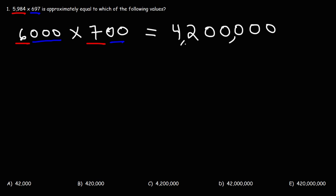Now, let's put our commas. So, the answer is about 4.2 million. Therefore, answer choice C is the correct answer. Now, if you were to do the math to get the exact answer, here's what you'll get. So, let's multiply these two numbers the old-fashioned way.